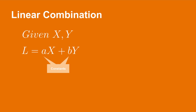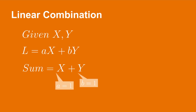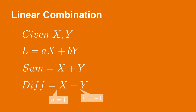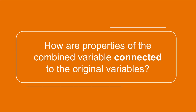The linear combination L is also a random variable. The two most basic cases are the sum, where a and b equal 1, or the difference, where a equals 1 and b equals negative 1. It is possible to have more than two terms in a linear combination. At this point it is important to consider what information we either gain or lose when combining random variables — specifically how the properties of the combined variable, such as the mean, variance, and standard deviation, are connected to those properties in the original variables.